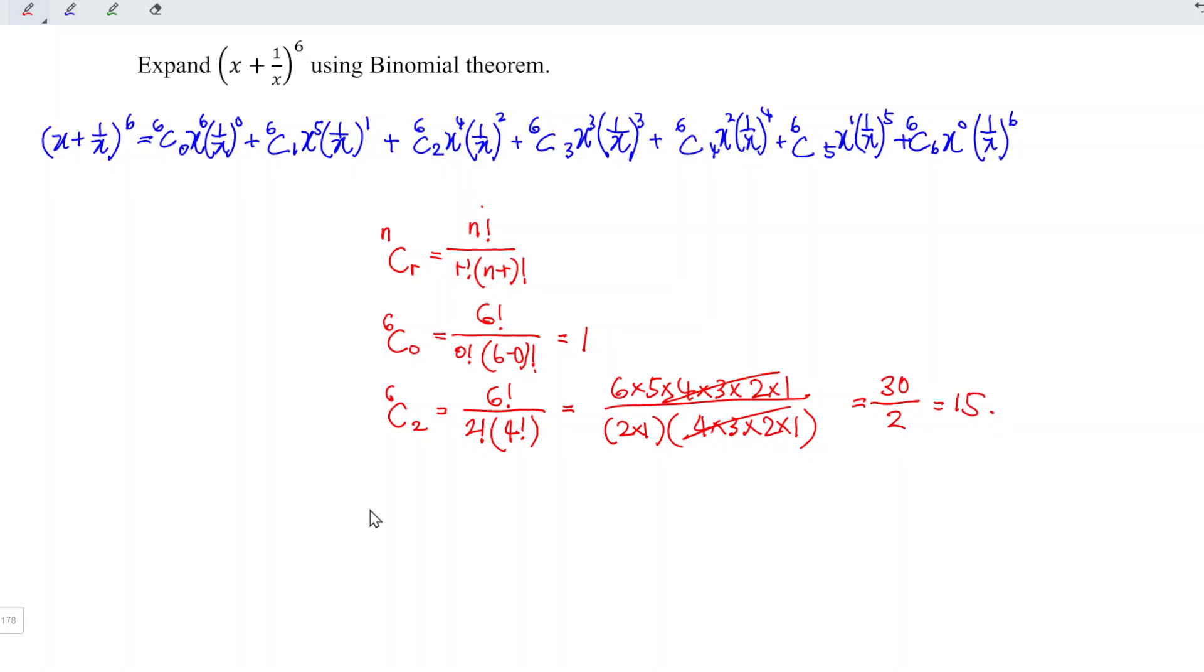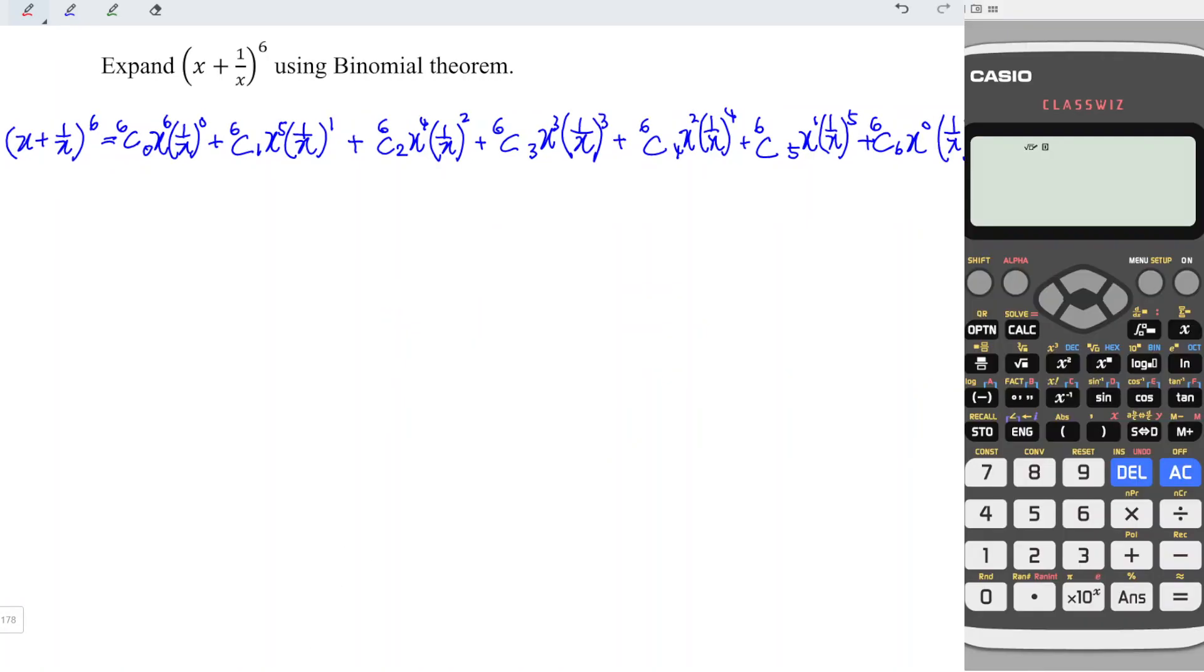By using the same idea, we could find all the coefficients. If you don't like to calculate manually, we can make use of the calculator. So we press number 6, shift divide to get C, followed by the number that we want. Press number 3, and we press equal. Then we should obtain the correct value.